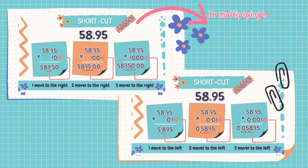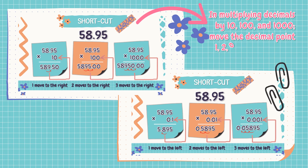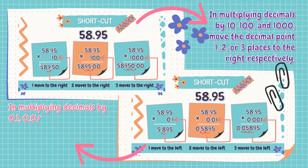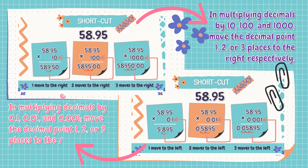In multiplying decimals by 10, 100, and 1,000, move the decimal point one, two, or three places to the right respectively. While in multiplying decimals by one-tenth, one-hundredth, and one-thousandth, move the decimal point one, two, or three places to the left respectively.